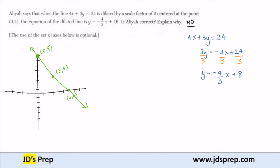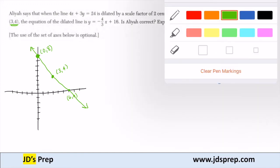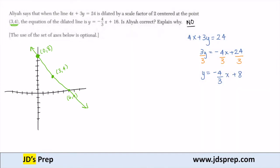So now this is dilated by a scale factor of 2 centered at the point (3, 4). Well, if we look, (3, 4) is on that line. Since the center of dilation is on the line, the equation is going to remain the same. That's why Aaliyah is not correct.